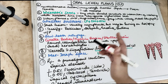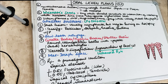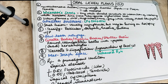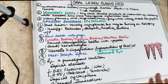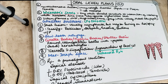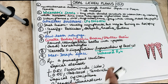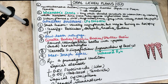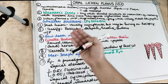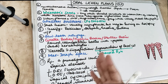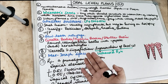Oral lichen planus is a worldwide disease; 0.5 to 1% of the world population is affected. There is also another form — lichen planus affecting the skin — but here we are specifically talking about oral lichen planus.